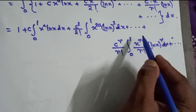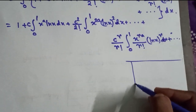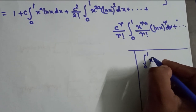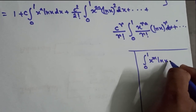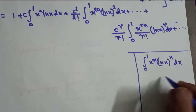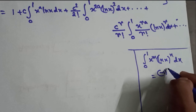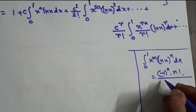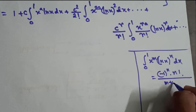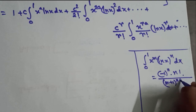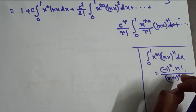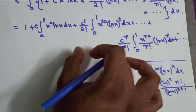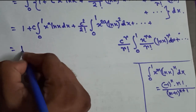We have solved a similar problem before: the integral from 0 to 1 of x^m · (ln x)^n dx equals (−1)^n · n! / (m+1)^(n+1). This known result allows us to evaluate each of the integrals in our series expansion.